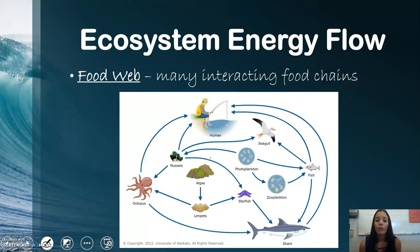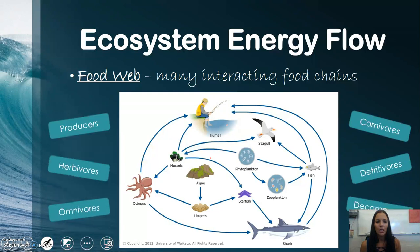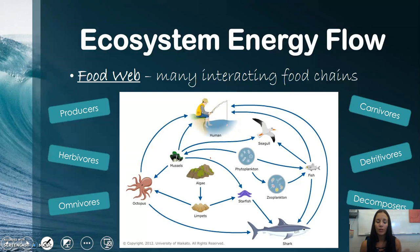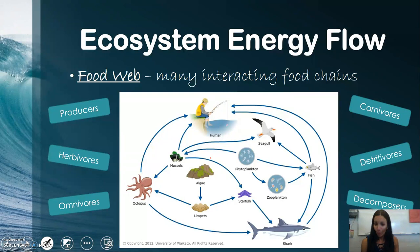A food web is many interacting food chains. Producers make their own food, like a plant. Herbivores only eat plant material — these are typically primary consumers. Omnivores eat both plants and animals and are typically secondary consumers. Carnivores are at the higher end of the food chain. Detritivores eat dead and decaying things — they're kind of scavengers. Decomposers actually break down things, like mushrooms.